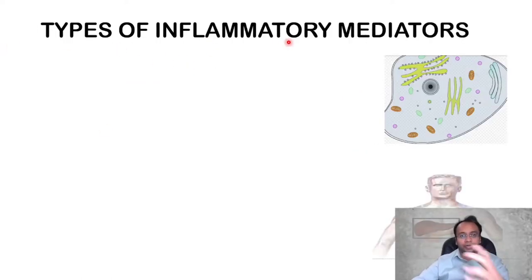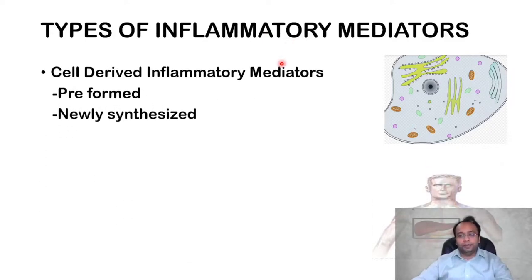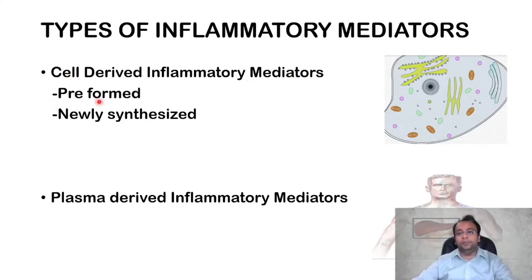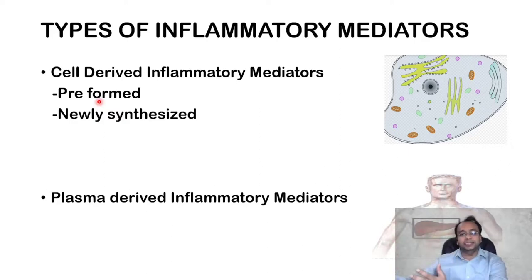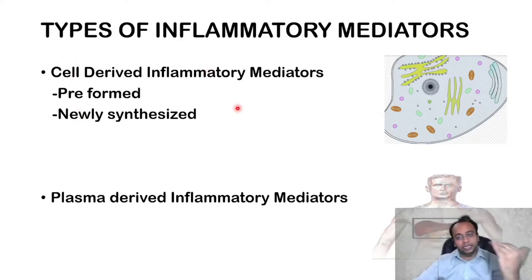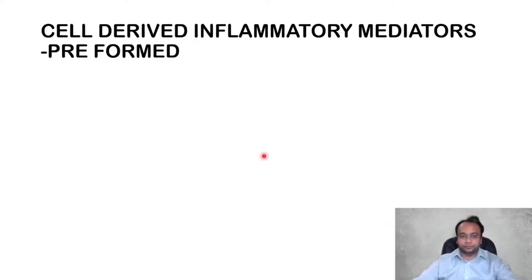There are two types of inflammatory mediators: cell-derived and plasma-derived. Plasma-derived mediators are synthesized in the liver. Cell-derived inflammatory mediators can be divided into two subtypes: preformed mediators, which are present in granules and ready to release upon any injury stimulus, and newly synthesized mediators, which are not preformed and are produced during inflammation.